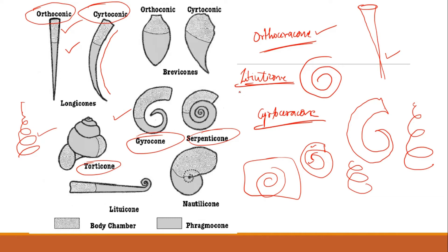Then you have a litiuticone, also known as your baculatricone. In litiuticone the shell is partly straight and then partly coiled. You can see the shell is partly straight and then at the end near the phragmocone it is partly coiled. So this is your litiuticone.